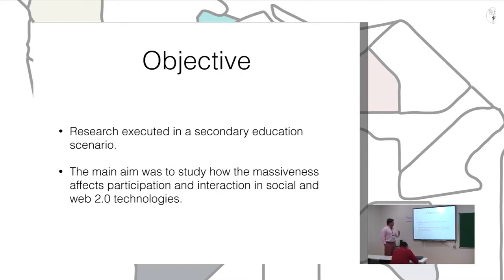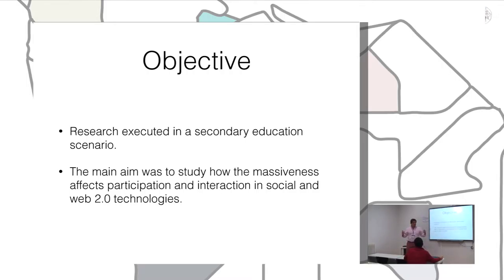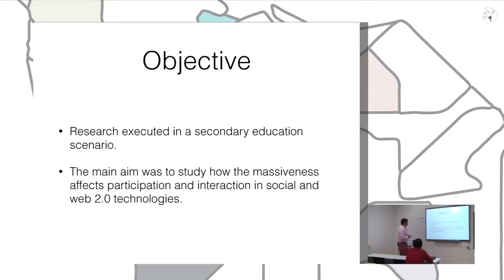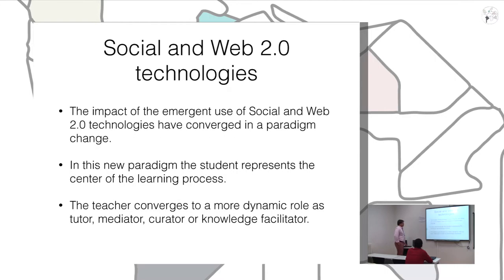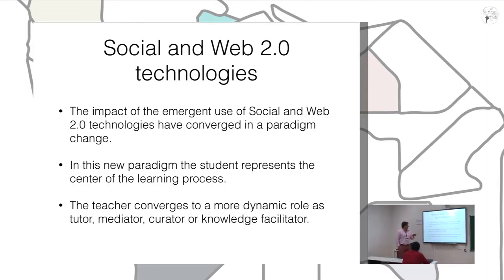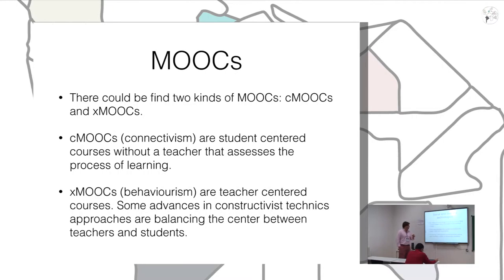The objective of the research is to see if introducing a larger social group of students — larger than the classroom itself, way larger — in this case 300 students working together in the same virtual environment, improves the learning process. We use two web technologies: forums and wikis. Contents come from open educational resources and some content developed specially for this approach.